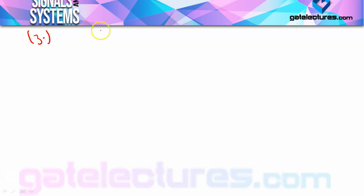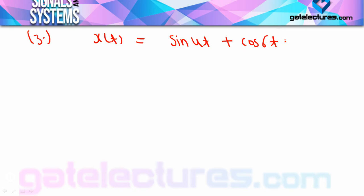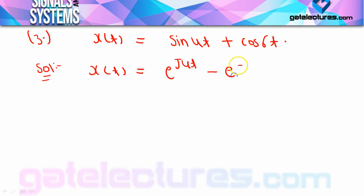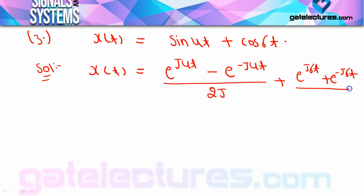Question number 3: a Fourier series representation is given — sin(4t) + cos(6t). It is asked which coefficients of the complex exponential Fourier series are present. Since this is an exponential Fourier series question, we first write the given Fourier series in exponential terms. x(t) = [e^(j4t) − e^(−j4t)]/(2j) + [e^(j6t) + e^(−j6t)]/2.